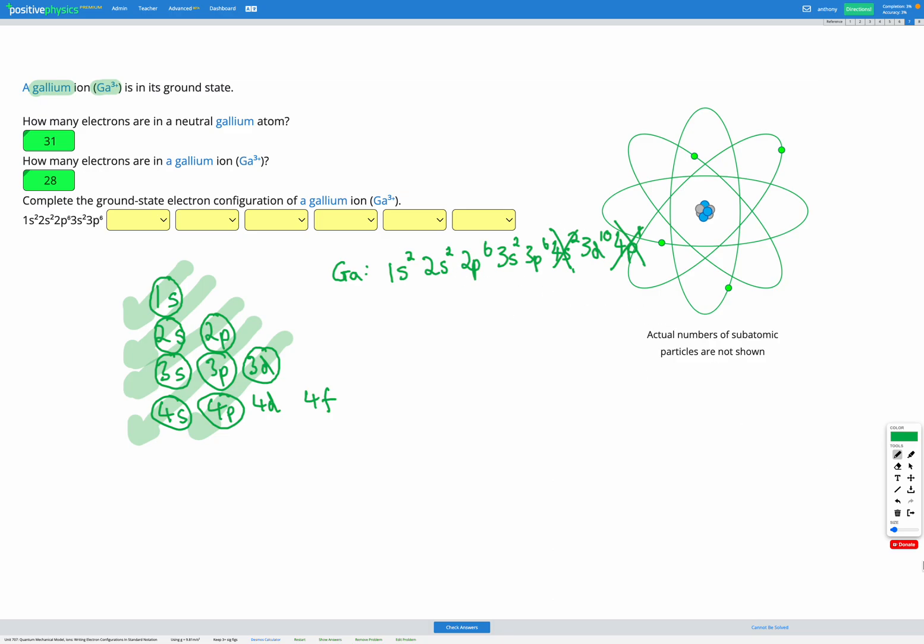Now we're filling out our electron configuration. Up to 3p⁶ they've written out for us. Then we had 4s² which is actually gonna be 4s⁰, it's empty for our ion. Then the 3d we had full with 3d¹⁰. 4p that was then empty, 4p⁰. And then the rest are also going to be empty.